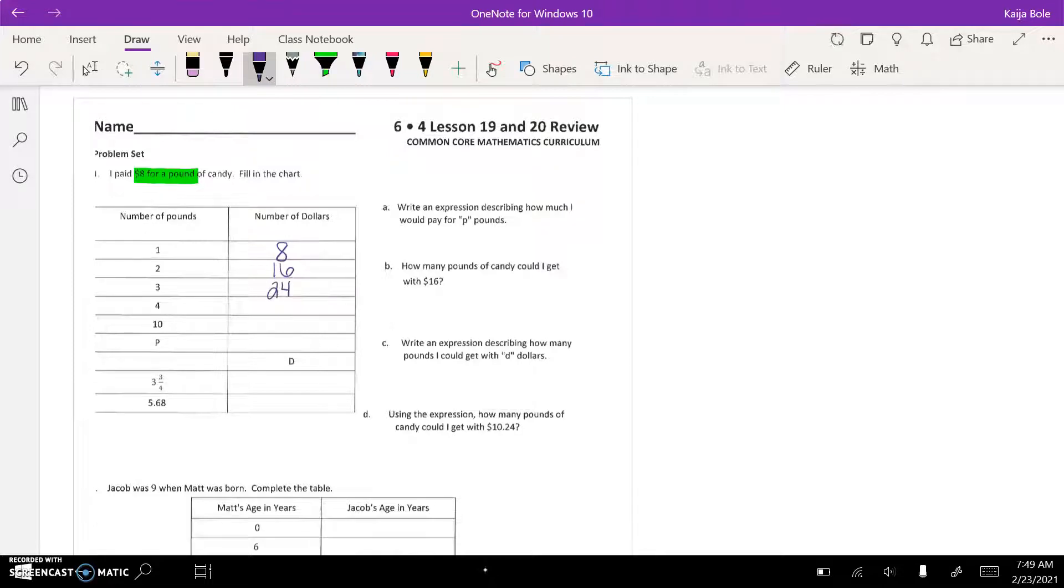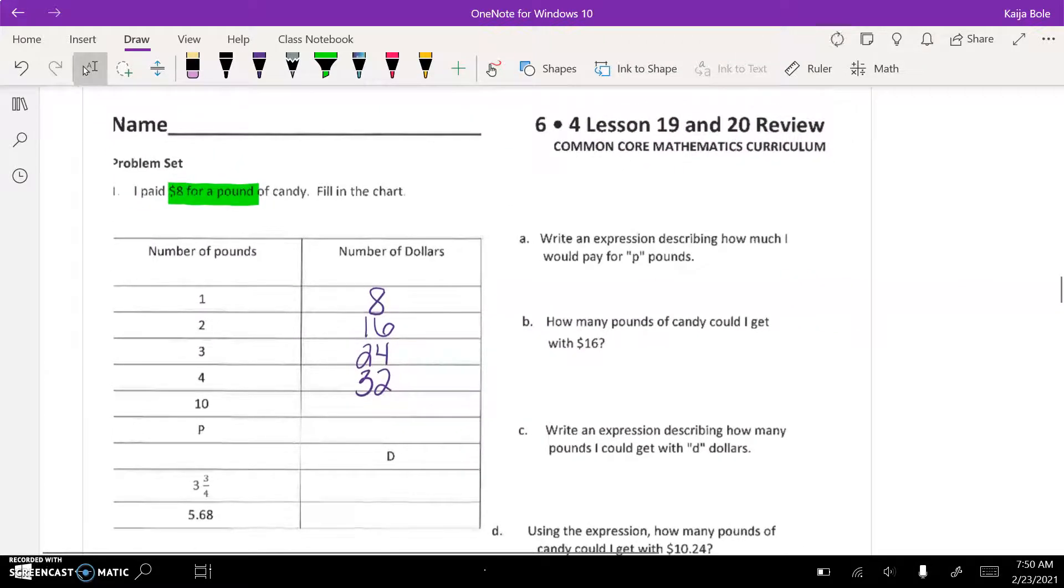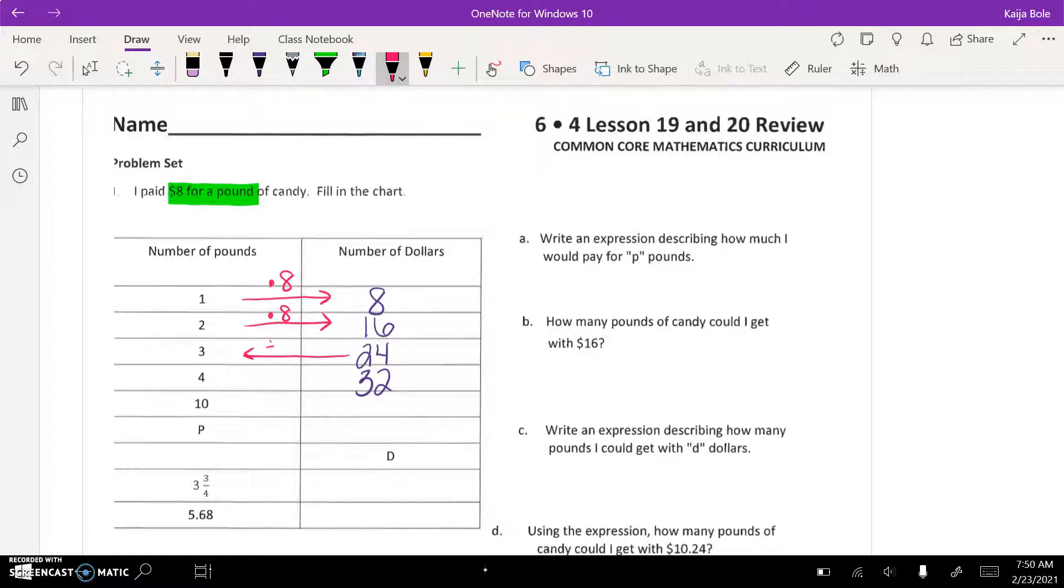But now pay attention here, it jumps down to ten. So maybe before we go any farther, you want to fill in your pattern. How do we get across the table here? Well, we are multiplying by eight every time, and then to go the other way we would be dividing by eight.